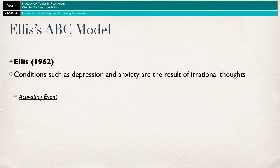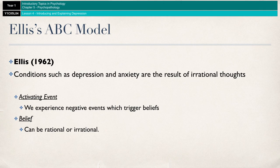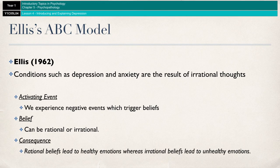Ellis created the ABC model. A stands for activating event — we experience a negative event, which then triggers B, the belief. The belief can be either rational or irrational; a healthy belief would be a rational belief, whereas irrational beliefs are more unhealthy and will lead to something like depression or anxiety. C is the consequence — the emotion that comes from the belief. Rational beliefs lead to healthy emotions, whereas irrational beliefs lead to unhealthy emotions.